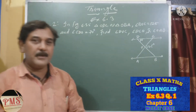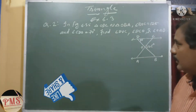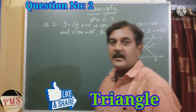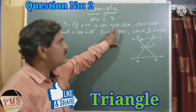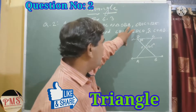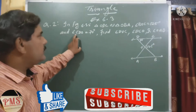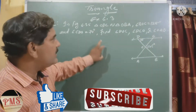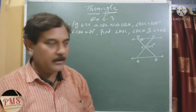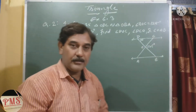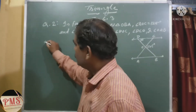What is the difference between similar triangles and congruent triangles? That's what we have to learn. In this question, triangle ODC is similar to triangle OBA. Angle BOC is equal to 125 degrees and angle COD is equal to 70 degrees. We need to find angles DOC, DCO, and OAB.